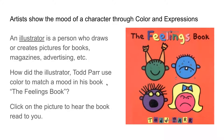Artists show the mood of a character through color and expression. Here we're going to talk about an illustrator. An illustrator is a person who draws or creates pictures for books, magazines, and advertising. So how did the illustrator Todd Parr use color to match a mood in his book, The Feelings Book? As you can see here on the front cover of the book —